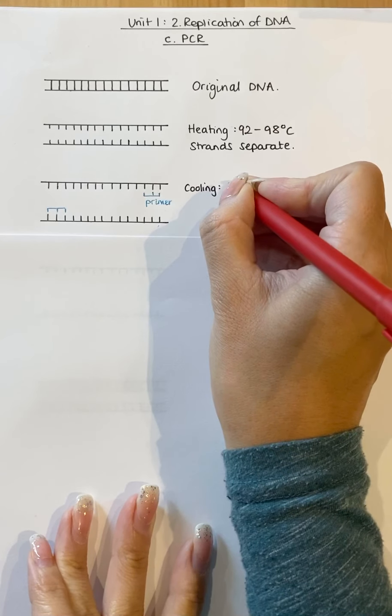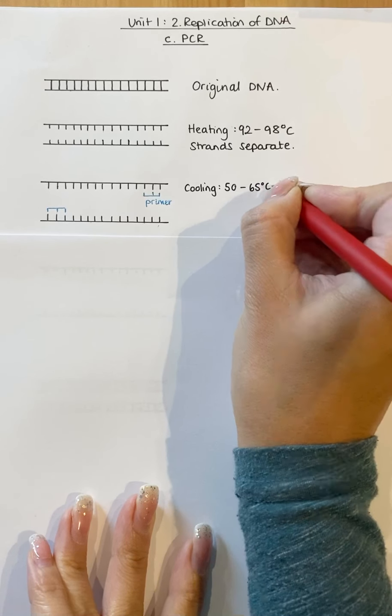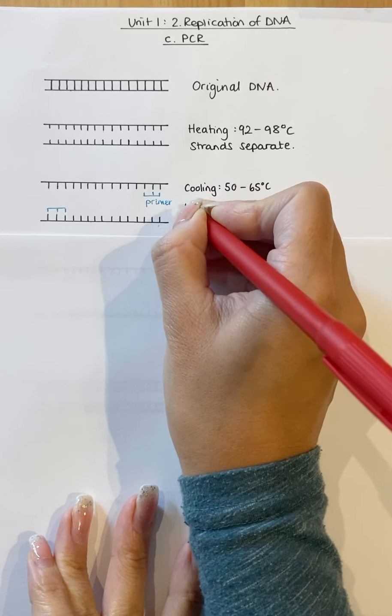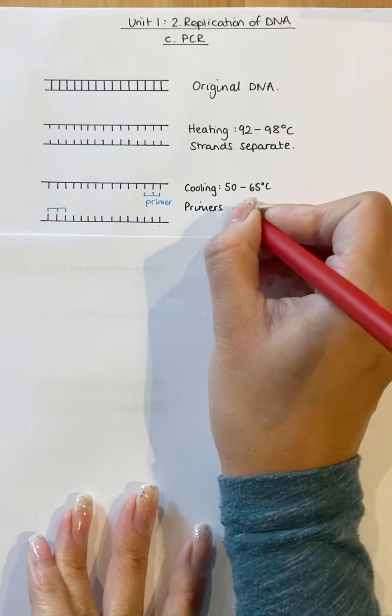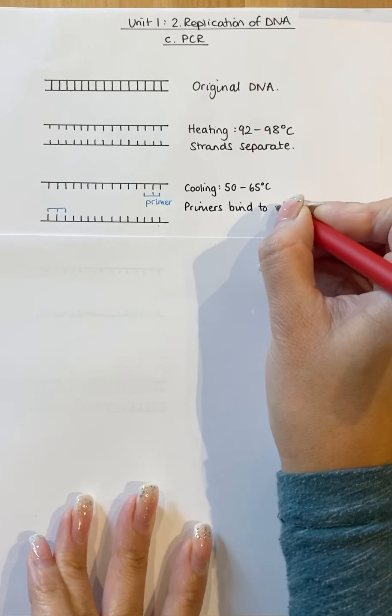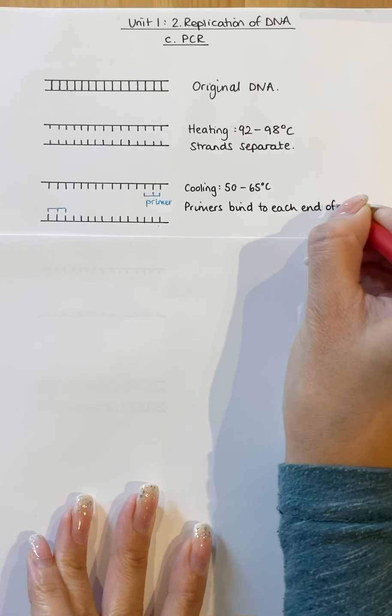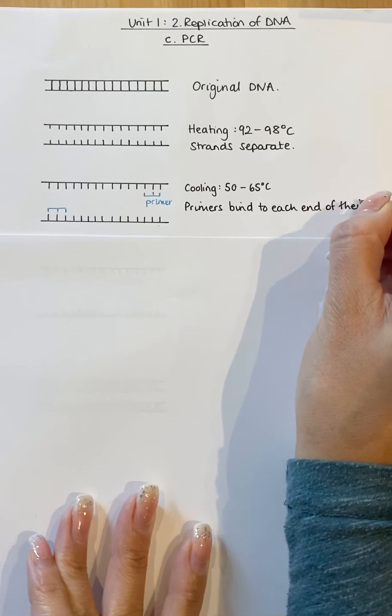And that is cooled to between 50 degrees to 65 degrees Celsius, and that allows primers to bind to each end of their specific target sequence.